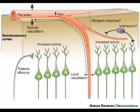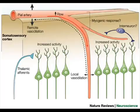Vasodilation is when the arterioles leading to the capillaries in the skin dilate, or get wider, allowing more blood flow to go to the capillaries near the skin's surface. This means that more heat can be lost from the skin, and this is why you might look red when you exercise.